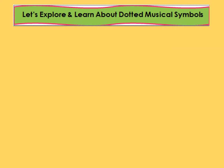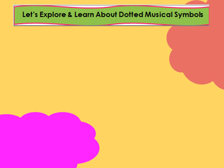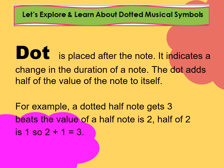Now let us explore and learn about dotted musical symbols. In music, a dot placed after the note indicates a change in the duration of a note. The dot adds half of the value of the note to itself. For example, a dotted half note gets three beats: the value of a half note is two, and half of two is one, so two plus one equals three. Therefore, the value of a dotted half note is three.